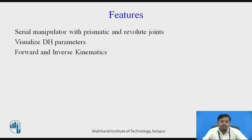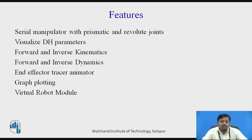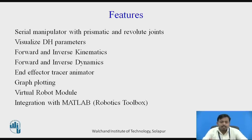We can also visualize the working of forward and inverse kinematics. We can also do forward and inverse dynamics. We can trace the end effector path and also see the animation of this. We can also plot various graphs of position, velocity, and acceleration with respect to time. This software also has a virtual robot module with readymade robots, and it also has an integration with the Robotics Toolbox of MATLAB. So these are some features of this software.